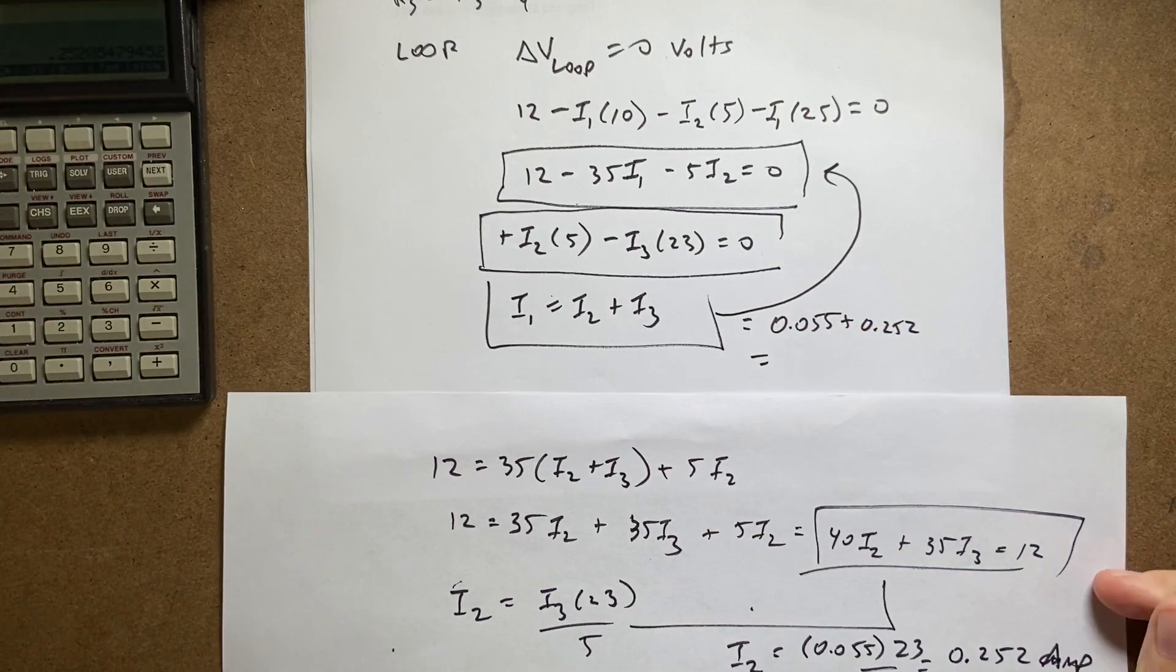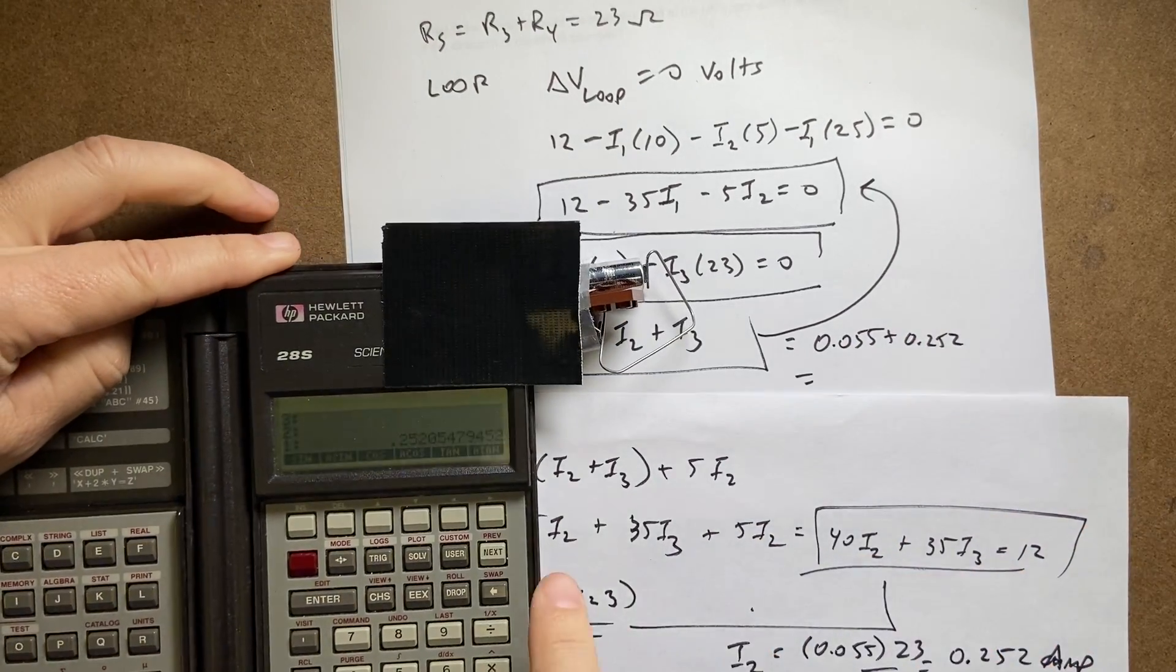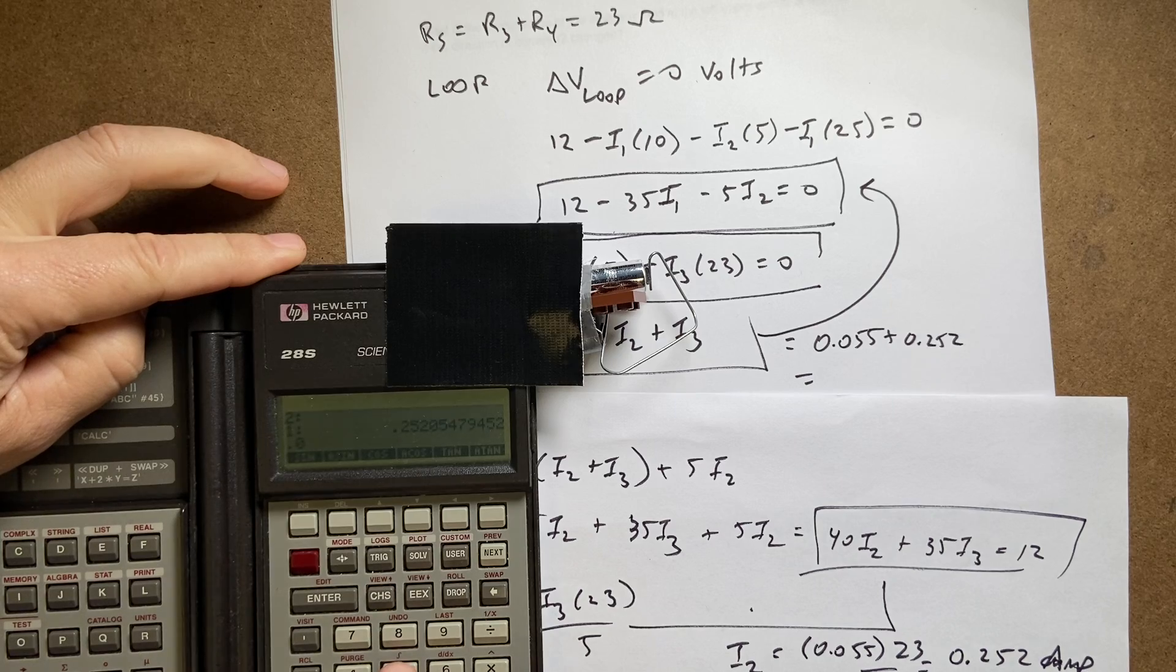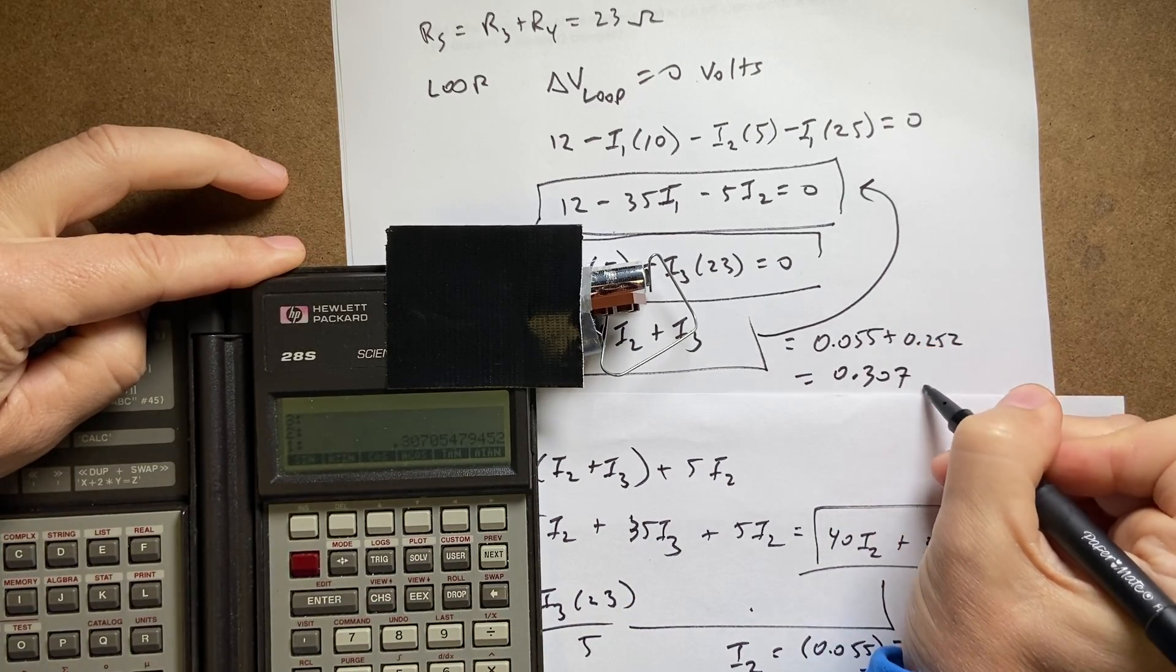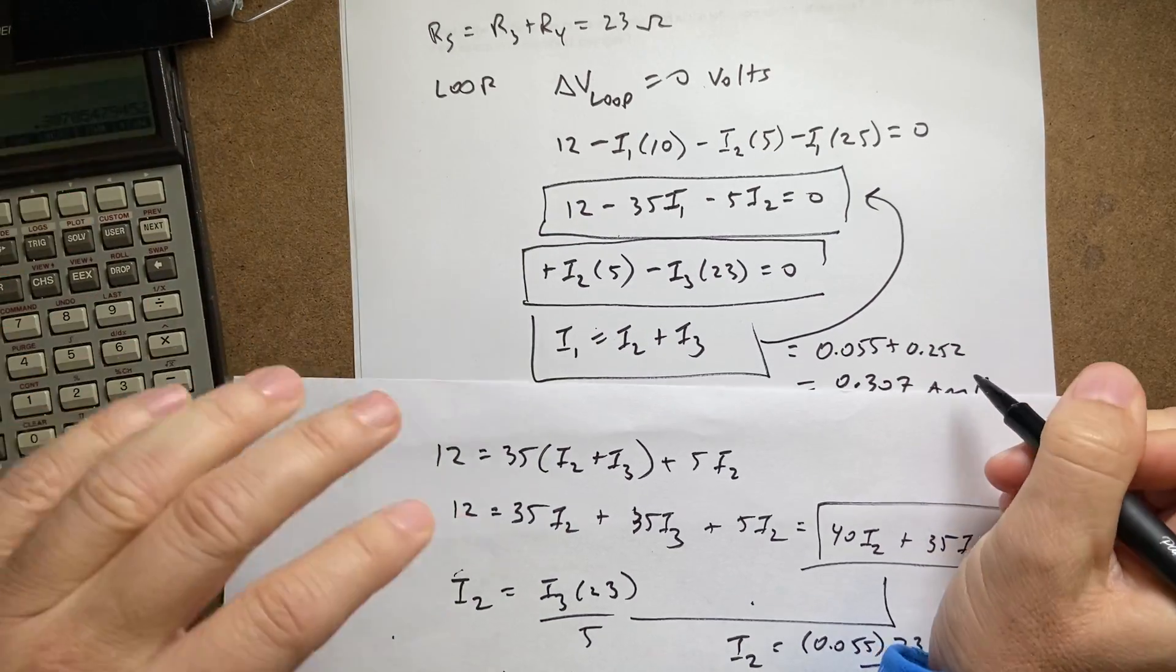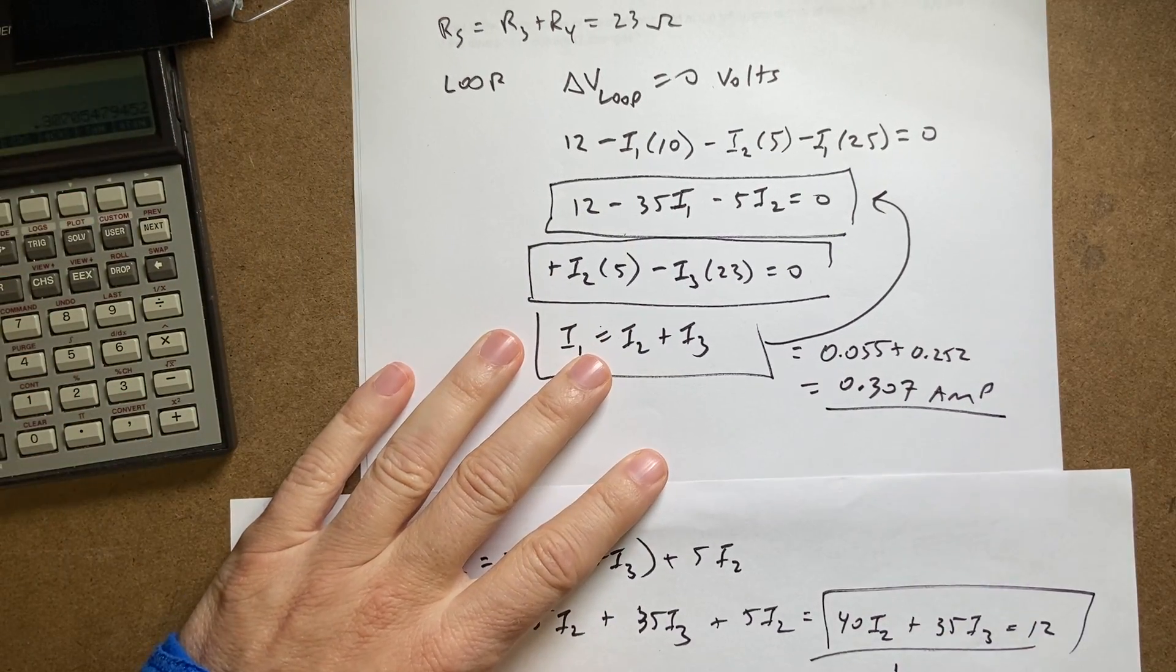And that gives me 0.055 plus—I get 0.307 amps.